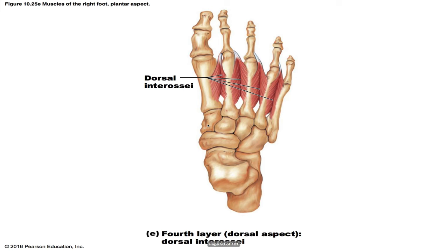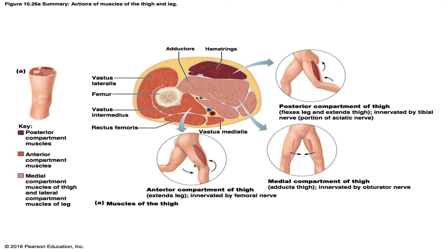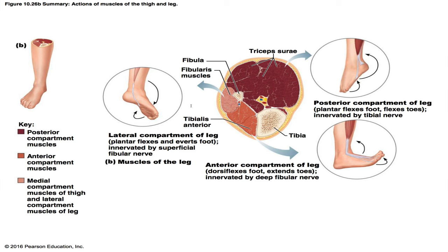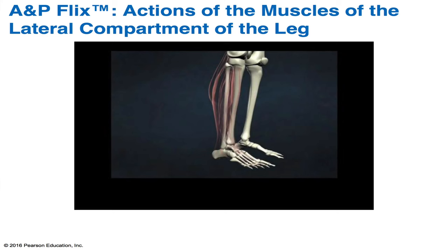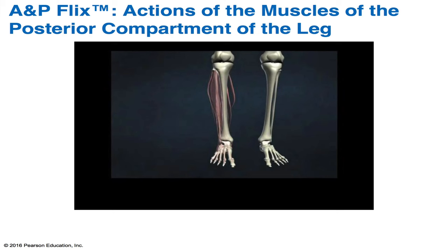In summary, the anterior compartment muscles of the thigh extend the leg; the medial compartment muscles adduct the thighs; the posterior compartment muscles flex the leg and extend the thigh. The lateral compartment muscles of the leg plantar flex and evert the foot. The posterior compartment of the leg plantar flexes the foot and flexes the toes. The anterior compartment of the leg dorsiflexes the foot and extends the toes. Be sure to view the animations for actions of the anterior, lateral, and posterior compartments of the leg on the Pearson website, YouTube, or the DVD from your book.